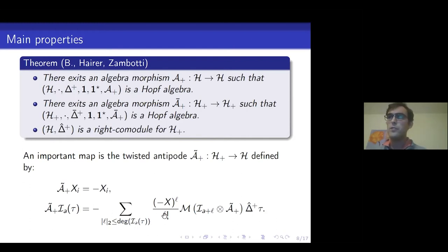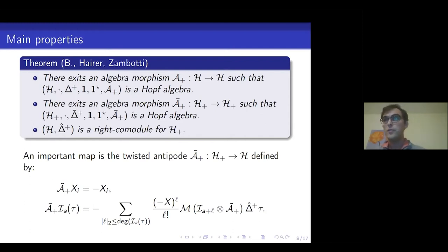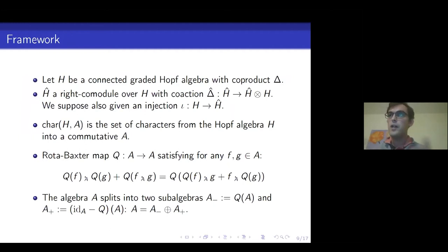The claim — made in our work with Martin Hairer and Lorenzo Zambotti — is that this twisted antipode gives an equivalent of the algebraic Birkhoff factorization. In the next slides I want to make this statement precise and match the two languages: the one using the twisted antipode, and the one using the classical algebraic Birkhoff factorization or Bogolubov recursion.